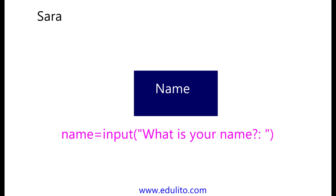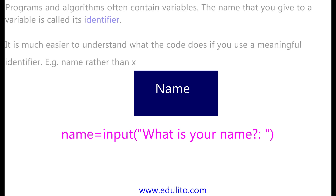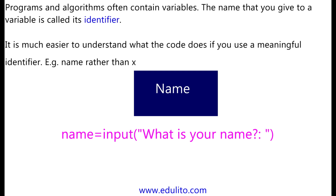A variable is like a box that can store one value. For example, a name. Programs and algorithms often contain variables. The name that you give to a variable is called its identifier. It is much easier to understand what the code does if you use a meaningful identifier, e.g., name rather than, say, x.